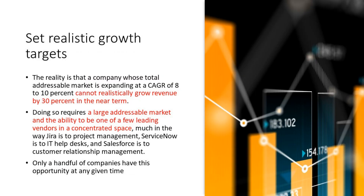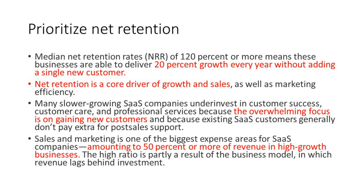McKinsey talks about setting realistic growth targets: in a market where the compound annual growth rate is only 8–10% of your TAM, you can't realistically grow revenues by 30% in the near term. Doing so requires a large TAM and the ability to be one of a few leading vendors in a concentrated space — they give examples of Jira for project management, ServiceNow for IT help desks, and Salesforce for CRM. Only a handful of companies have this opportunity at any given time. They also emphasize prioritizing net retention.